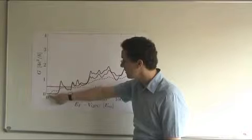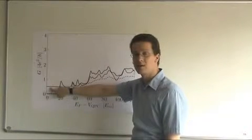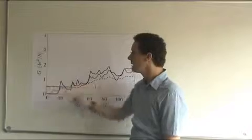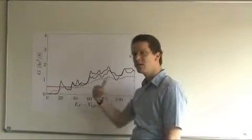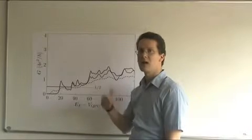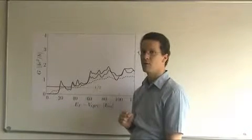Without Majorana, zero conductance. With Majorana, quantized conductance of 2e² over h. This quantization is a direct probe of the Majorana nature because it originates from the same particle-hole symmetry which guarantees the properties of the Majorana fermion in the first place.